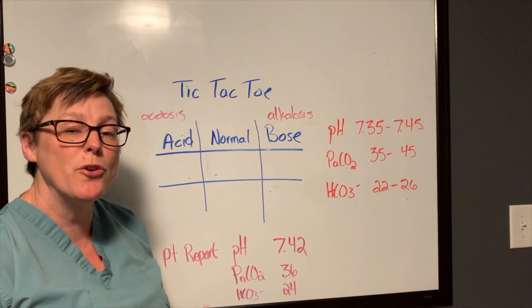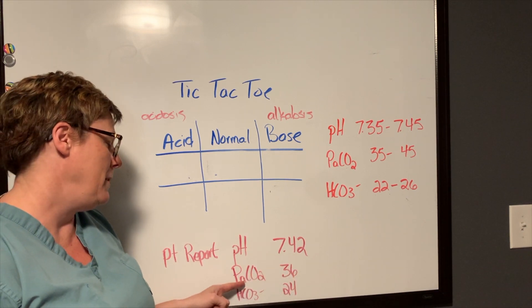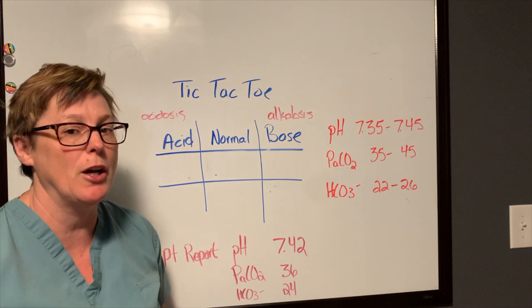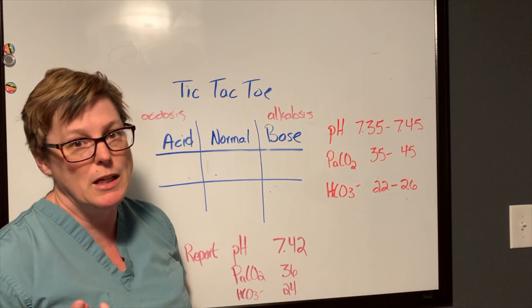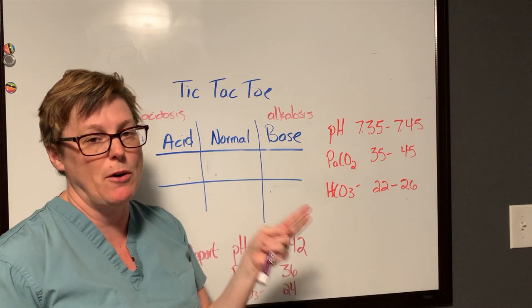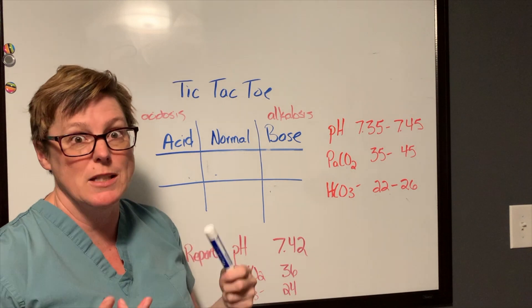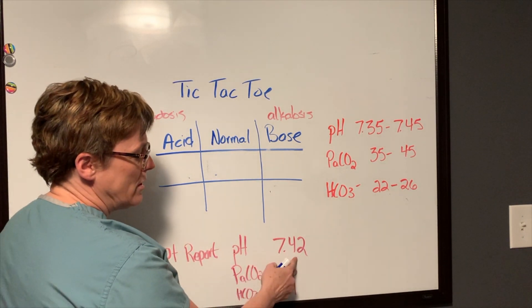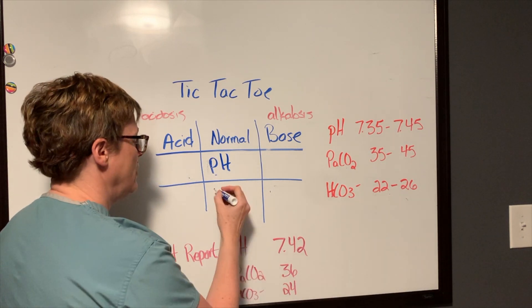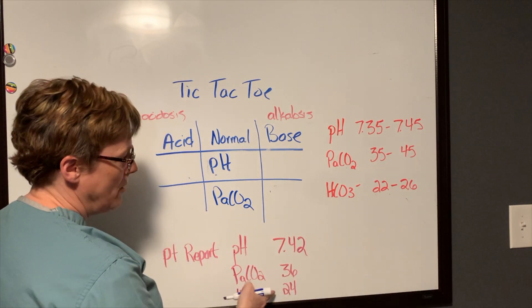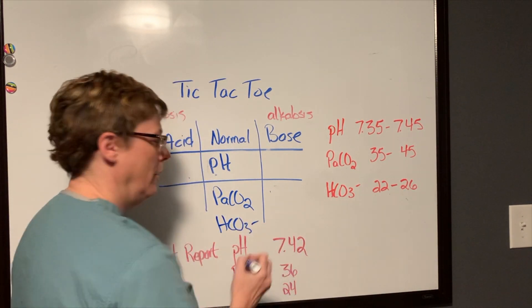Let's do one more. In our third example we have a pH of 7.42, a PaCO2 of 36, and a bicarb of 24. You should be starting to recognize your normals — you really should commit these to memory. There are three sets of numbers: acid-base, which one's respiratory, which one's kidneys. So 7.42 is normal, PaCO2 of 36 is also normal, and bicarb of 24 is also normal. I don't have anybody with an acid-base imbalance! So the next time they say you shouldn't be having fun at work, you just pull out that tic-tac-toe board and show them how much fun interpreting acid-base balances can be.